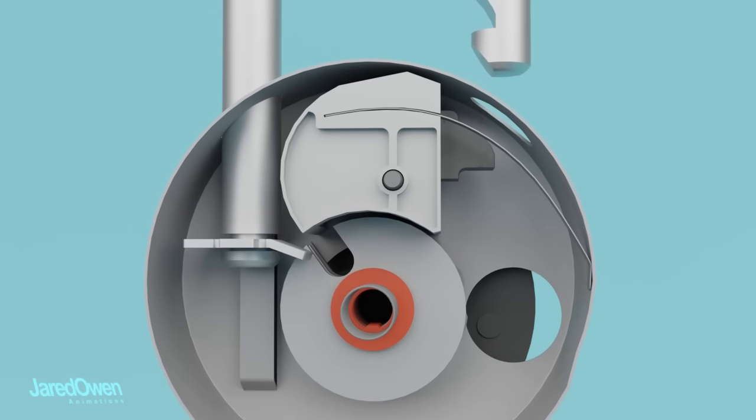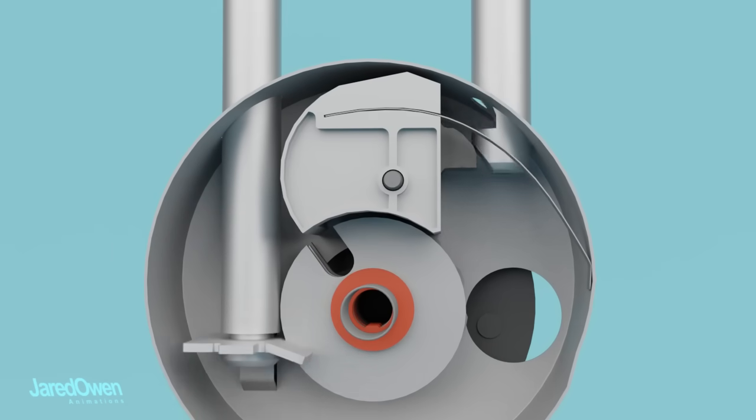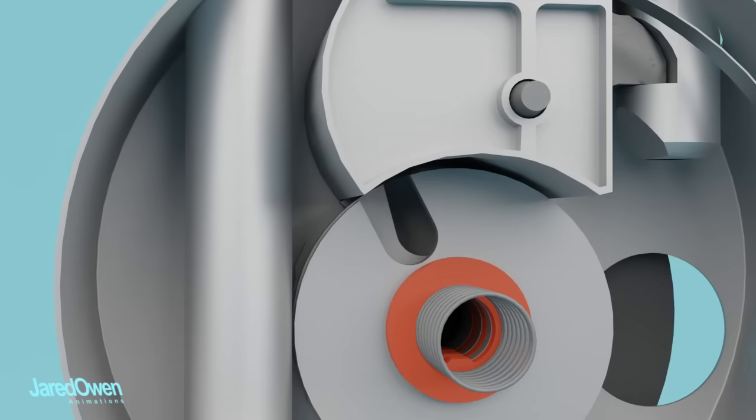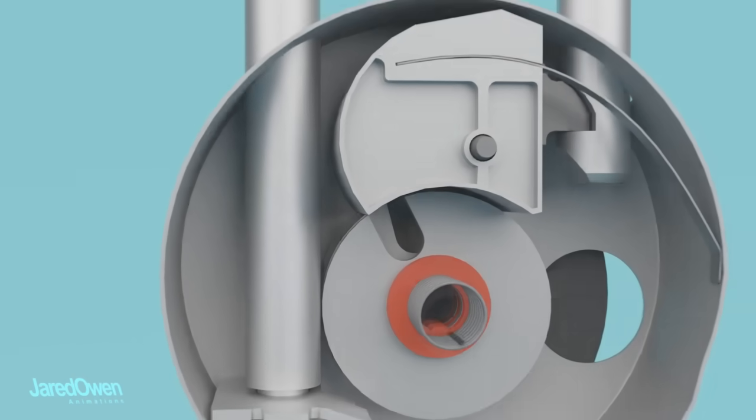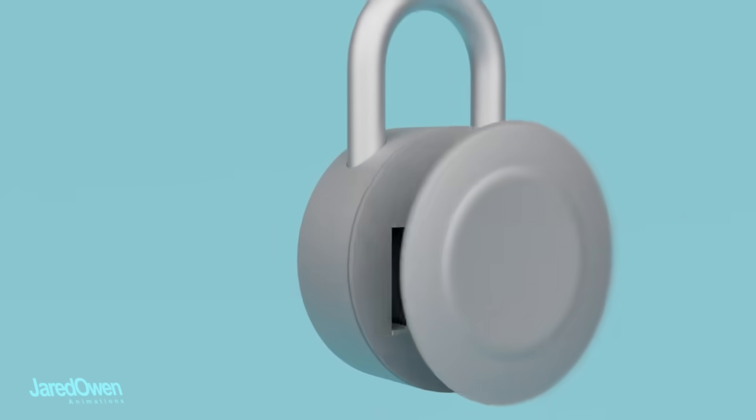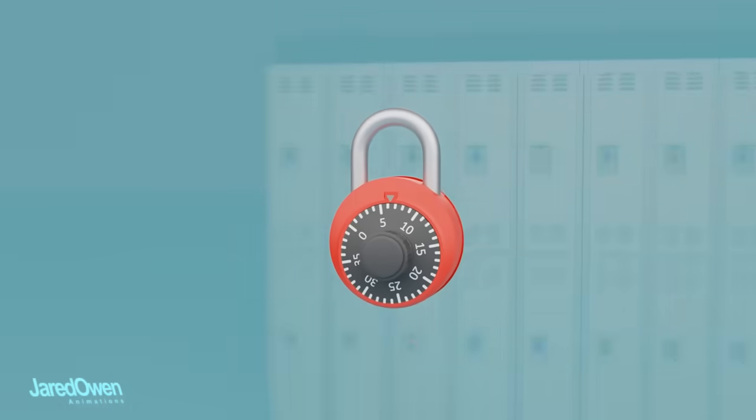As the shackle is pushed back in, it comes down with a bit of a jolt, which is usually enough to nudge the cams out of alignment. This means the lock won't open a second time for free. You'll need to use the correct combination once again.